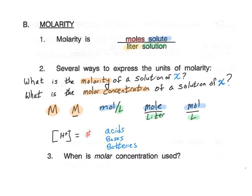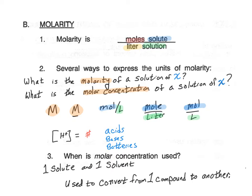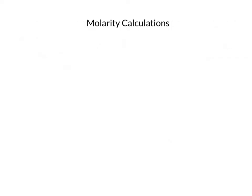Molar concentration is most commonly used when you have just one solvent and one solute. It is also commonly used to convert from one chemical to a different chemical, because we can see how they react or how much product is produced. So molarity is used for a lot of chemical calculations. The units are moles per liter, and it is always solute over solution.